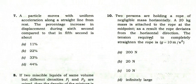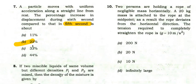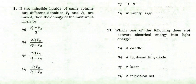Next: a particle moves with uniform acceleration along a straight line from rest. What is the percentage increase in displacement during the 6th second compared to the 5th second? You have to solve this — the right answer is 22%.